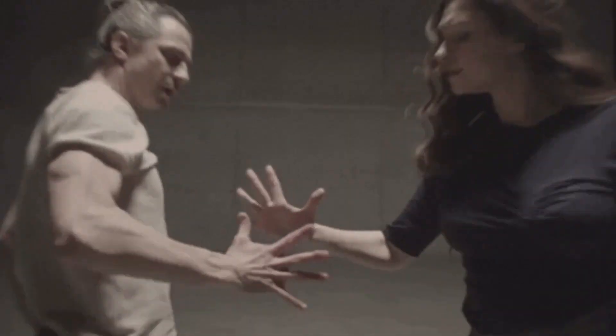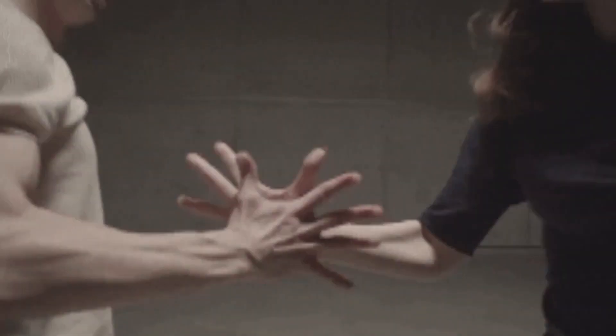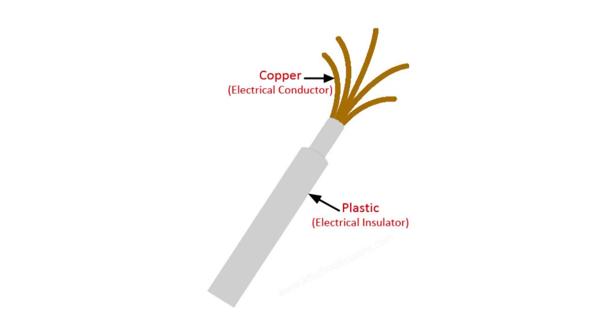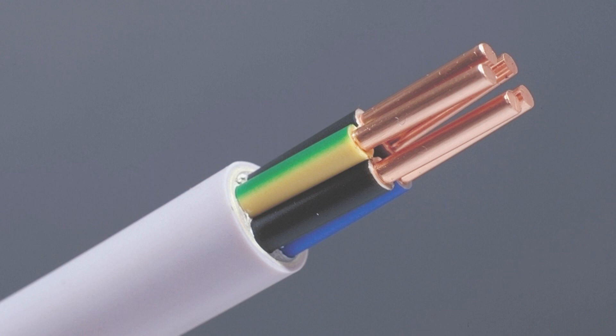Insulators are often used hand in hand with conductors, typically to support and separate currents, cable lines and other electrical equipment — without blocking the electricity flow required for that equipment's function.